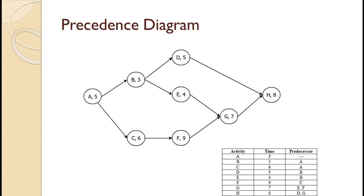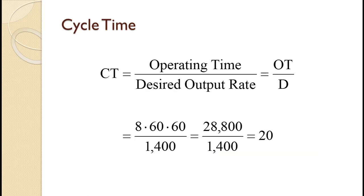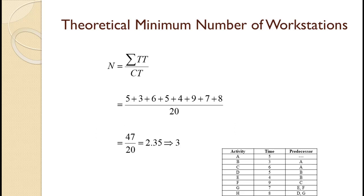The resulting precedence diagram is shown on the slide. Just like in the first example, they are working 28,800 seconds a day. The only change is the desired daily output of 1400, which yields a cycle time of 20 seconds. This also shows the relationship between capacity and cycle time: the lower the cycle time, the higher the capacity. We saw this when the capacity went from 800 to 1400 and the cycle time dropped from 36 to 20 seconds. With total task time of 47 seconds and a cycle time of 20 seconds, we will need 2.35 workstations, which we round up to 3.